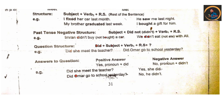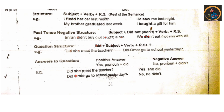Then we have questions. You keep in mind that if we have a helping verb before the subject, we place that first helping verb before the subject and add a question mark at the end of the sentence — it becomes a question. For example: 'Did she meet the teacher?' 'Did Omar go to school yesterday?'